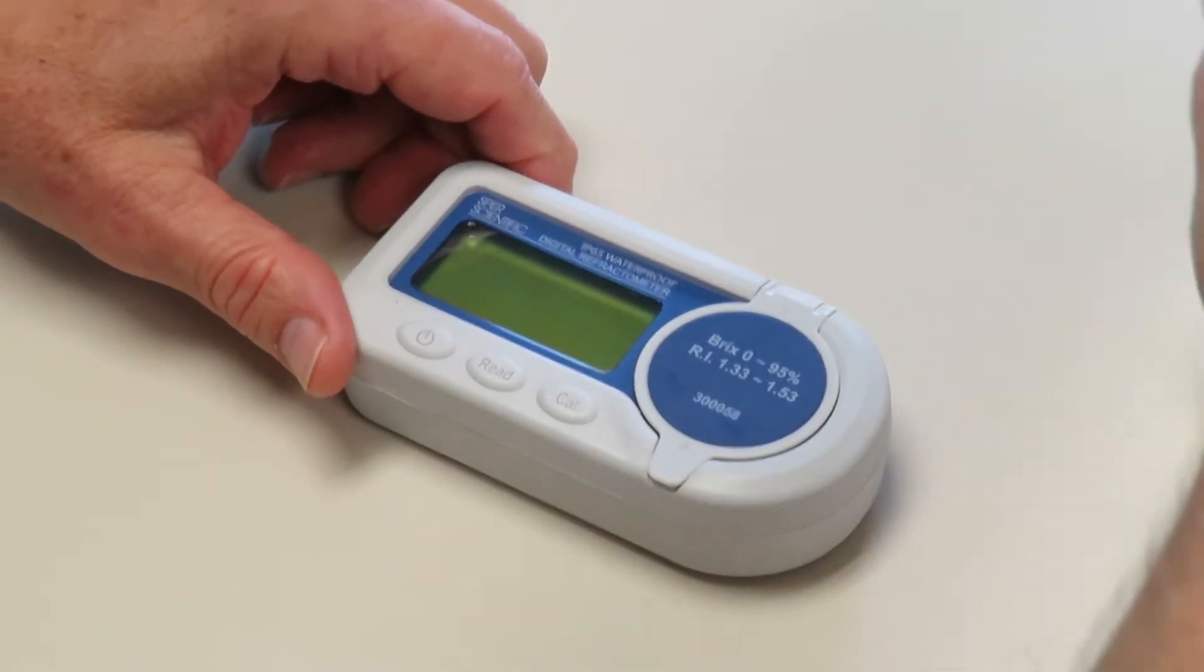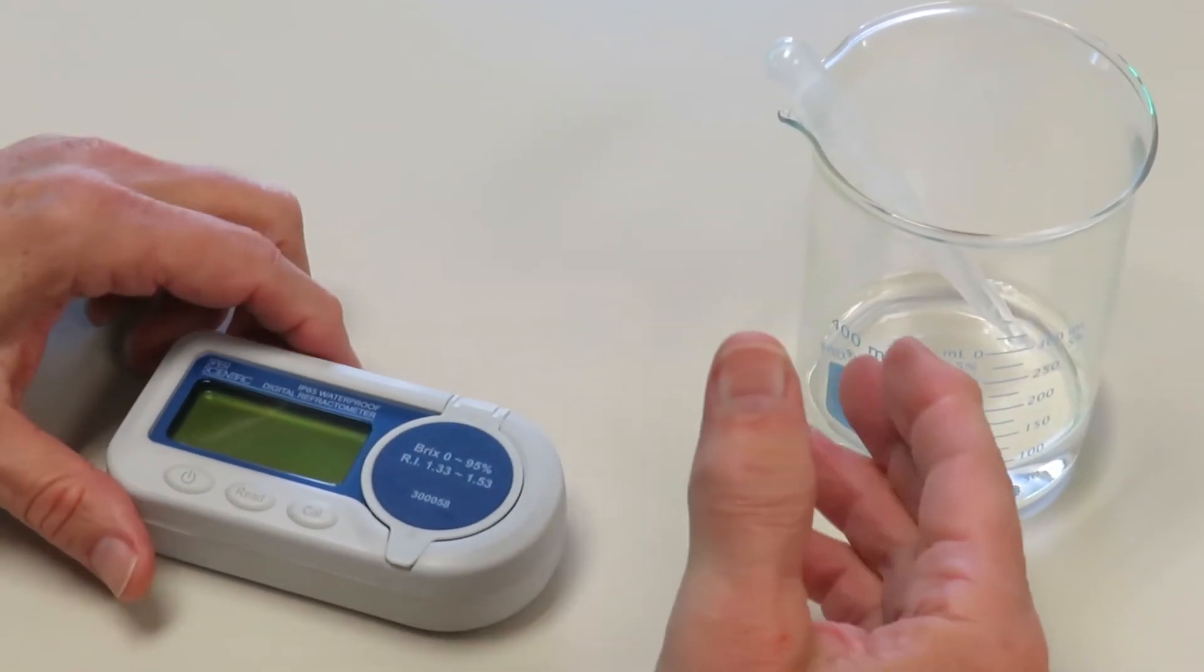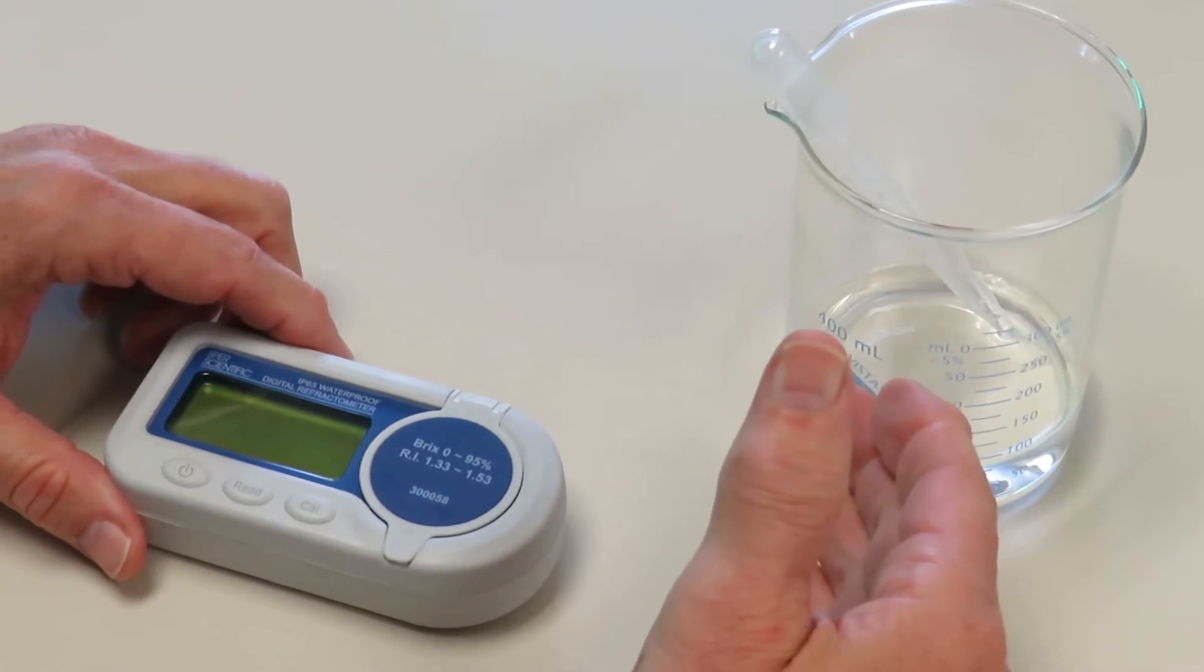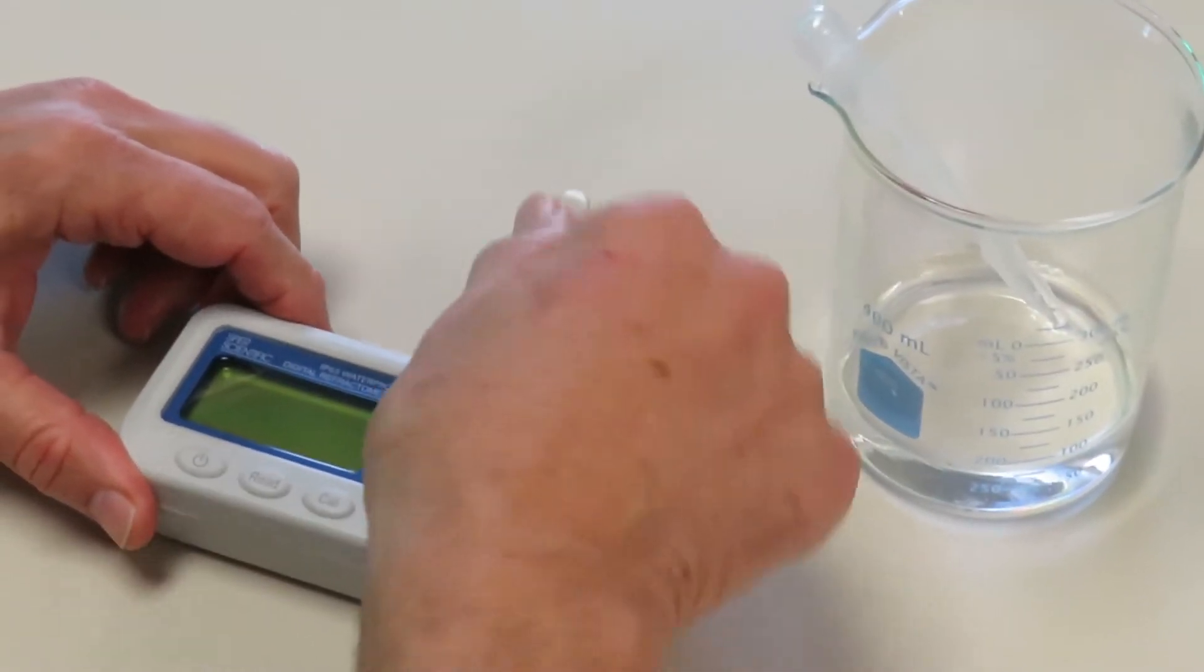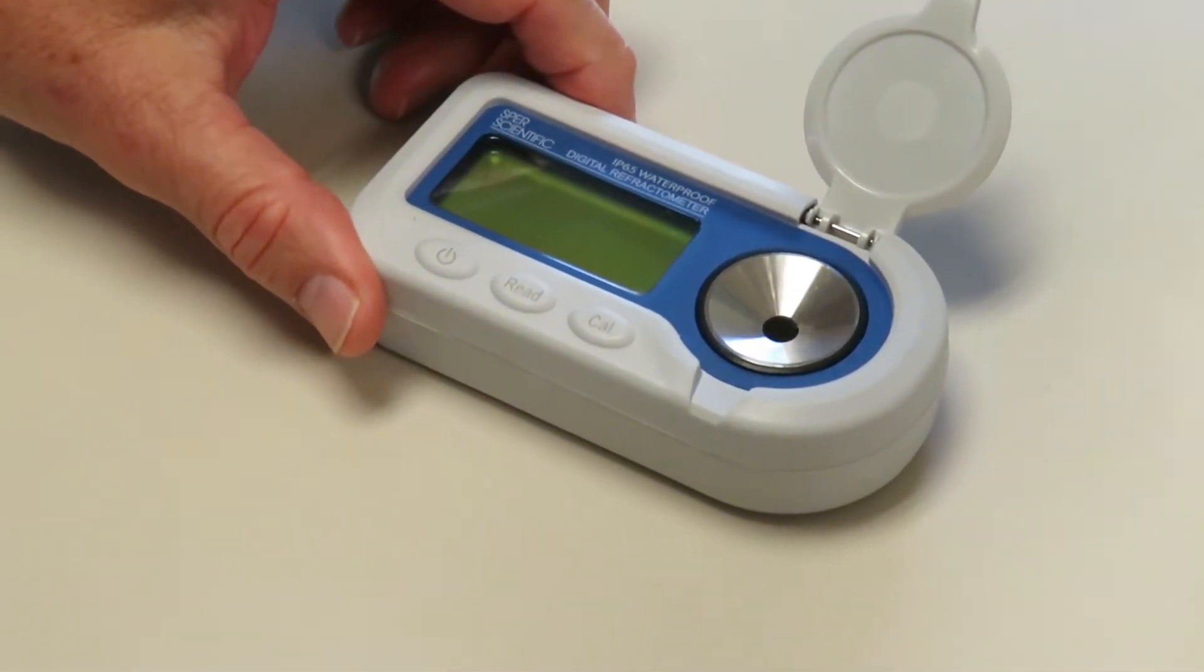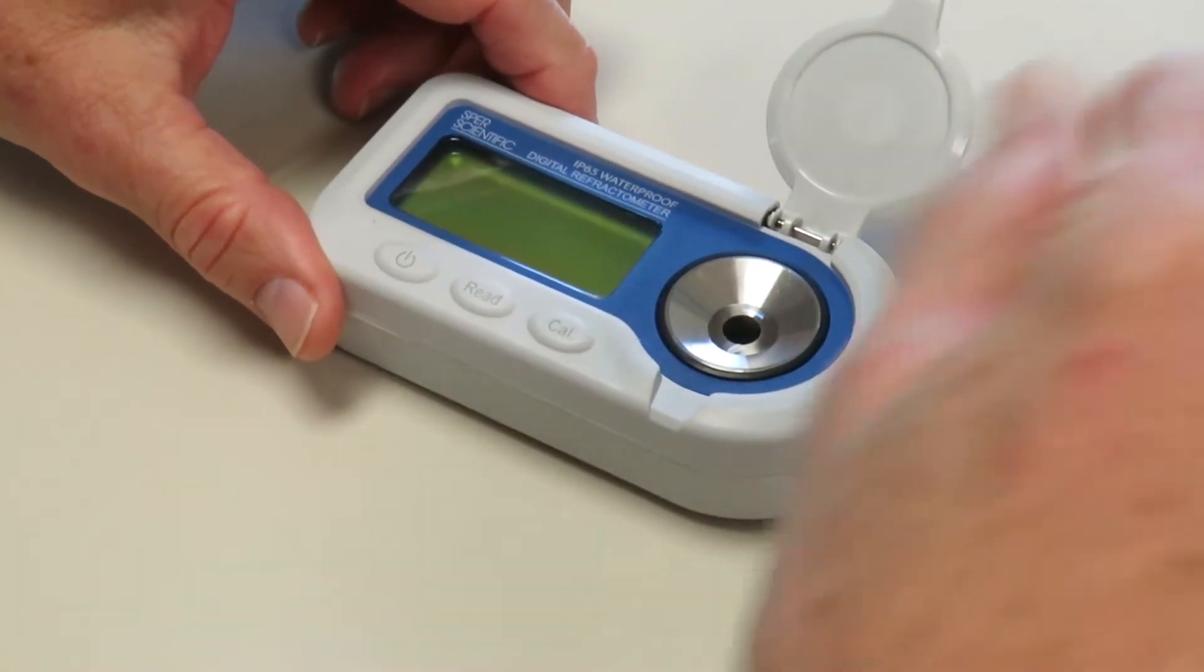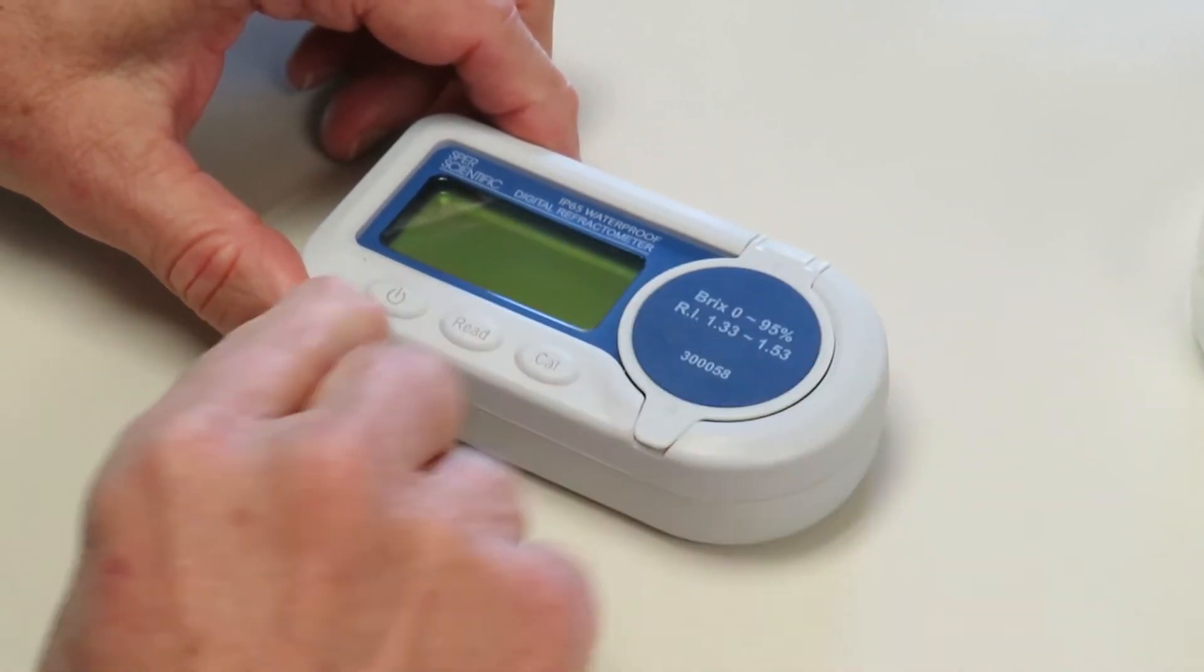First we'll calibrate it and we'll use distilled water. Now that's an advantage because if it was a calibration solution, that solution would evaporate over time and no longer have the same value, whereas distilled water always remains the same value. So all we do is we take some distilled water and we put it into the lens, making sure to cover the lens on the bottom of this well, and we cover it.